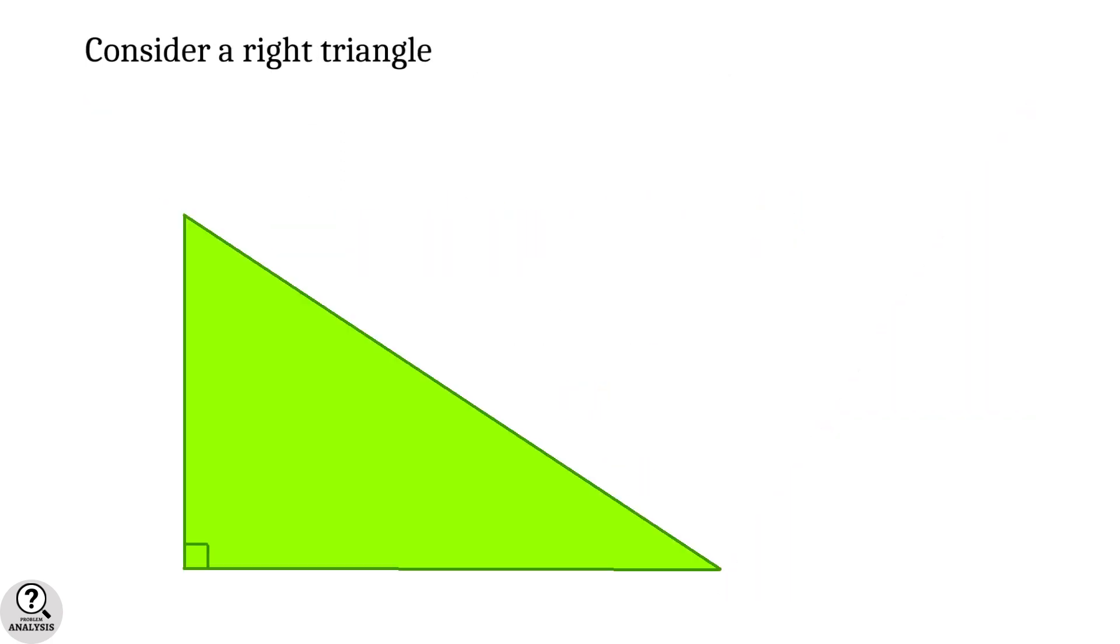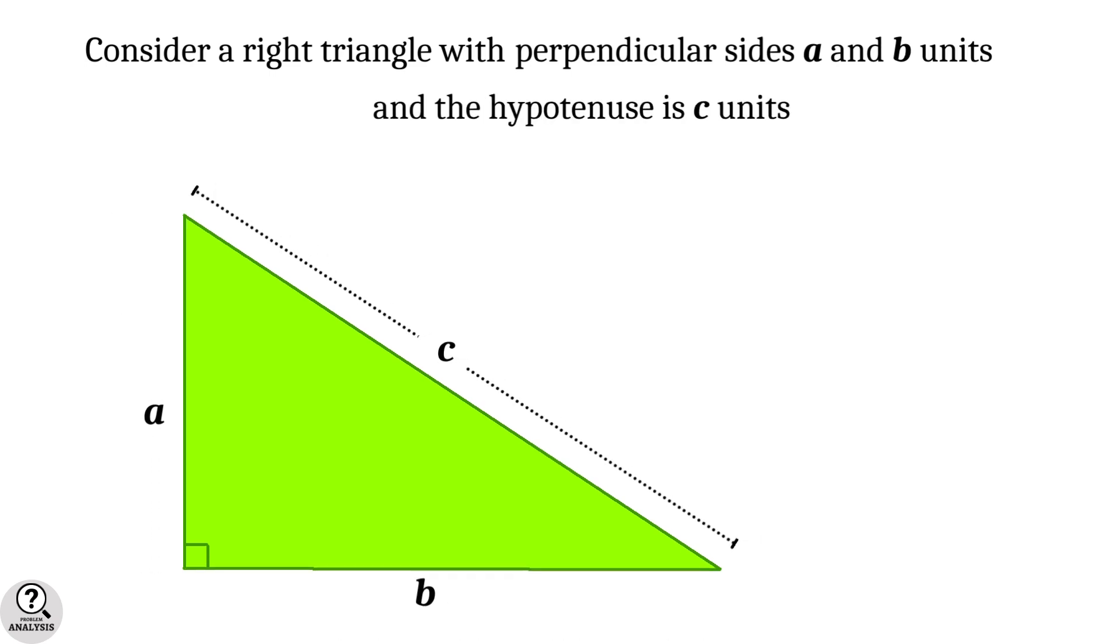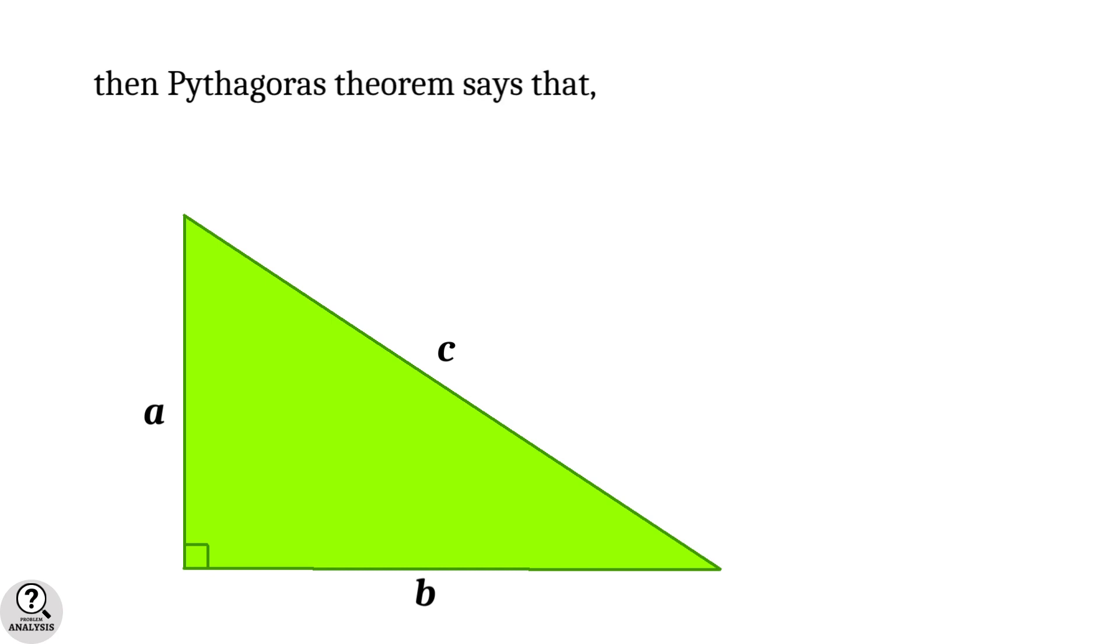Let's consider a right triangle with perpendicular sides a and b units and the hypotenuse is c units. Then according to Pythagoras theorem, a² + b² = c². That is, sum of squares of perpendicular sides is equal to the square of hypotenuse. Or c equals the positive square root of a² + b².